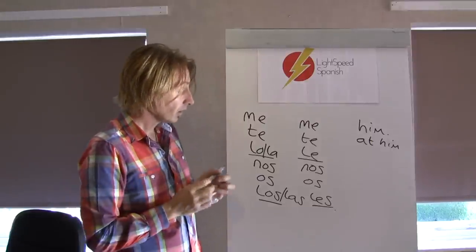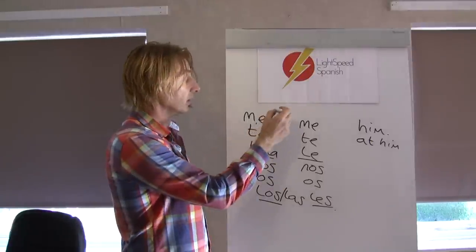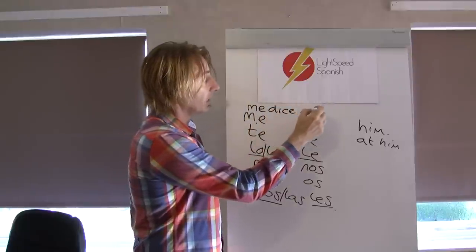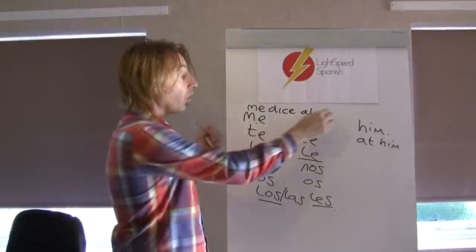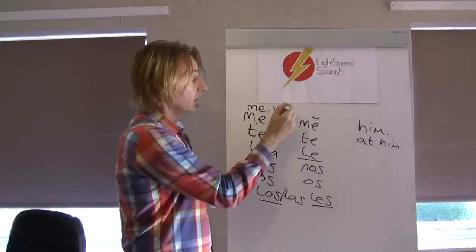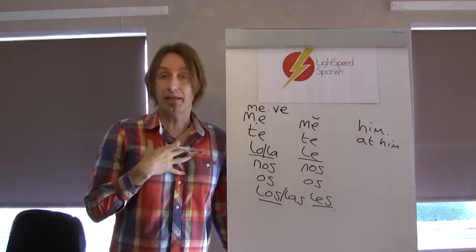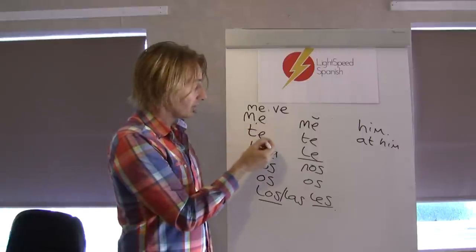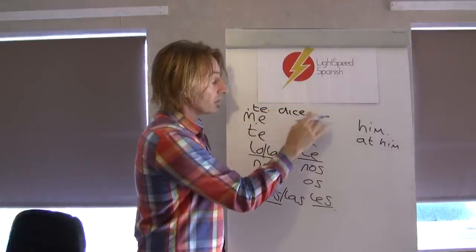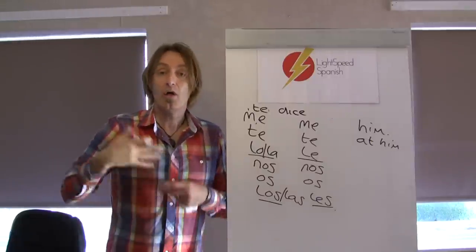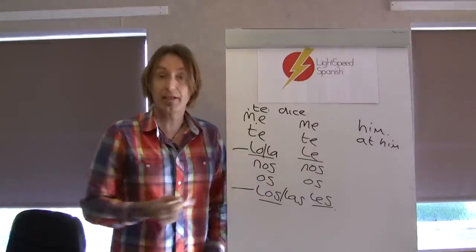For example, let's look with me. The sentence would be: 'me dice algo' — he tells me something. Or 'me ve' — he sees me. It's still 'me'; it never changes. If it's me, it's me. So the same with 'te' — he sees you, or he tells you something: 'te dice algo'. So the 'me' and the 'te', the 'nos' and the 'os' — no problem.